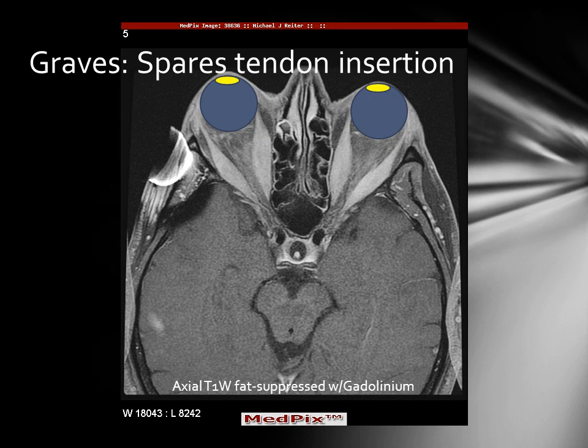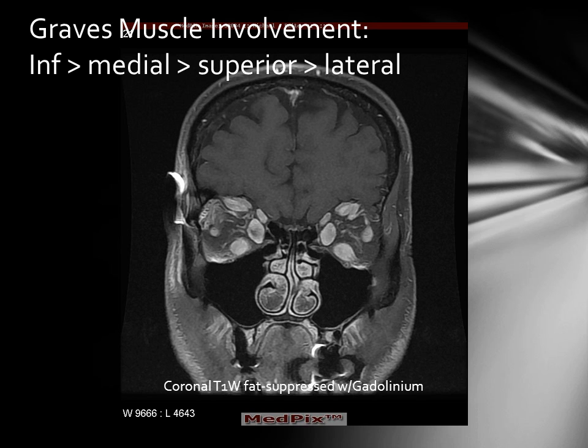We can also identify that even though the enhancing extraocular muscles demonstrate enlargement, there is sparing of the tendinous insertion of the muscle on the eyeball. This is characteristic of Graves' disease and may be a differential feature in distinguishing this process from orbital pseudotumor.